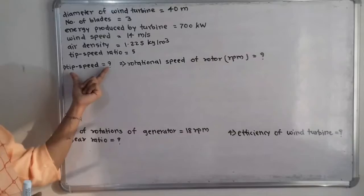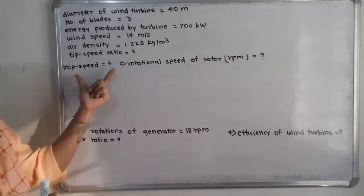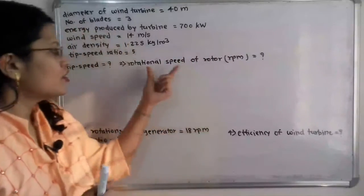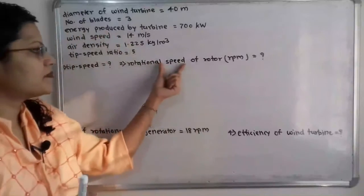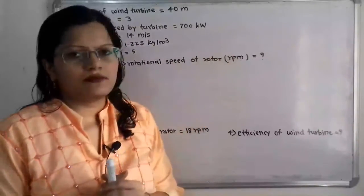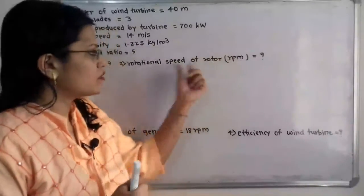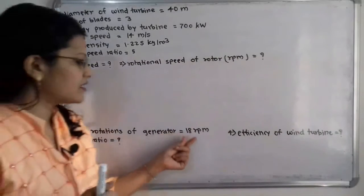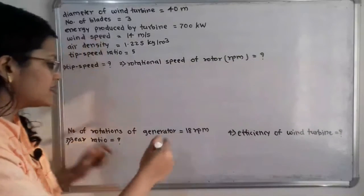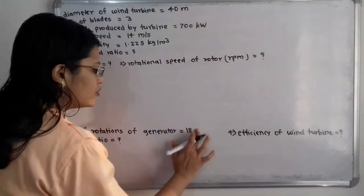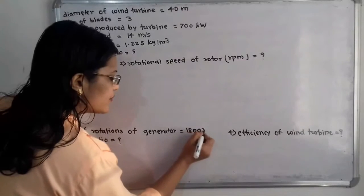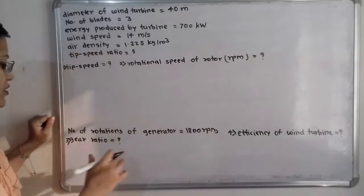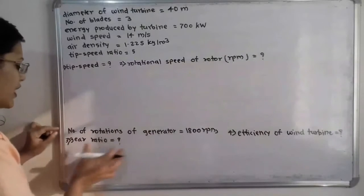For tip speed ratio 5, we have to find out the tip speed in meter per second and the rotational speed of the rotor in rpm — that is, revolution per minute. The number of rotations of the generator is given as 1800 rpm, and we have to find out what is the gear ratio.